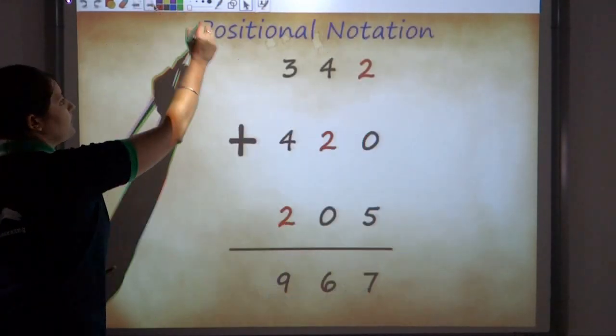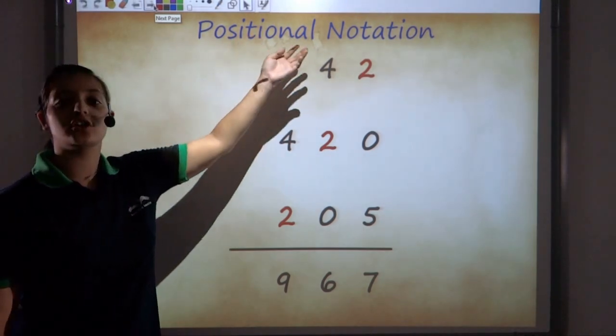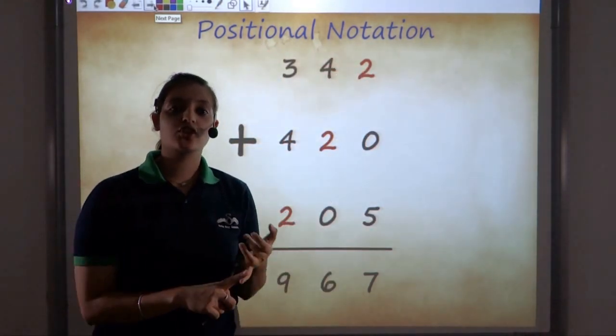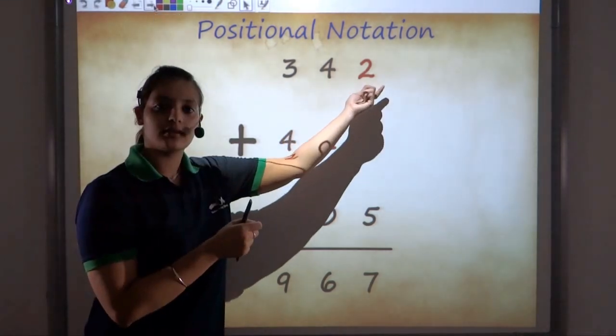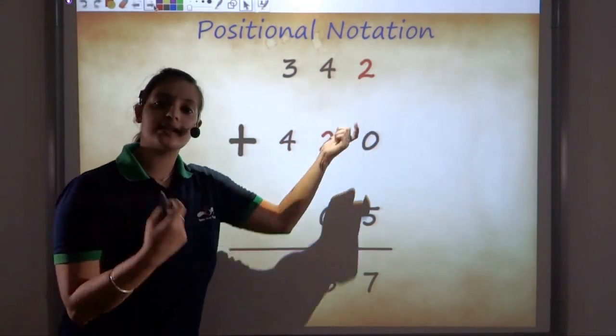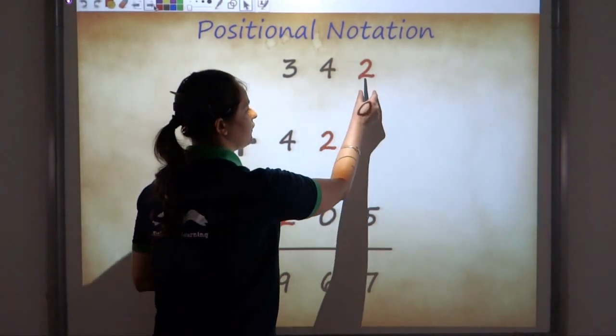But, if we look at our modern number system, our modern number system follows positional notation. What does positional notation mean? That same digit is used, and same digit represents different quantities when placed in different positions.